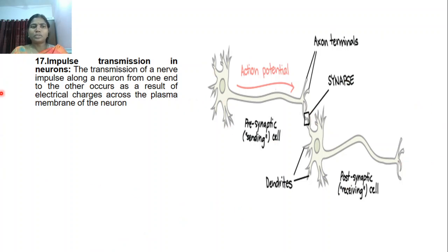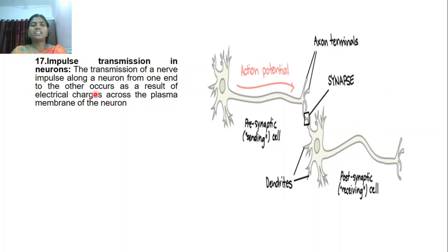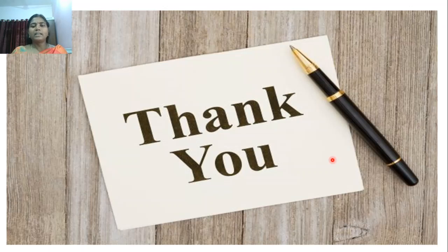In nerve cells, the transmission of impulse is done by the axon terminals — synaptic ends. This is also an extended region of the plasma membrane that results in the passage of electrical charges across the plasma membrane, helpful in impulse transmission. This is the summary of the functions of plasma membrane.